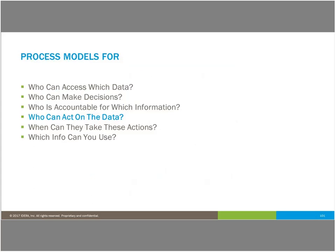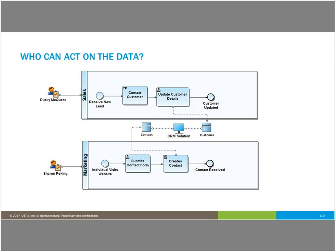The next example is who can act on the data. I've taken a sales path and a marketing path and identified how there are different inputs into the CRM solution. Marketing may be gathering contact information as people visit a website and that gets into the CRM solution, but the sales team may be the ones identifying who is actually a customer — because not all contacts and leads actually convert to customers. You wouldn't want marketing updating the customer record because they don't really know what defines a customer; the sales team is the one that implements the business rules regarding that.